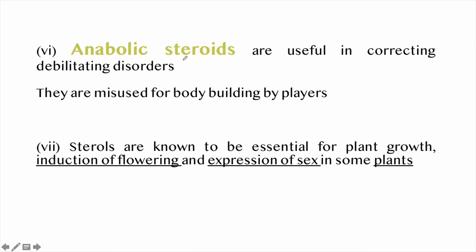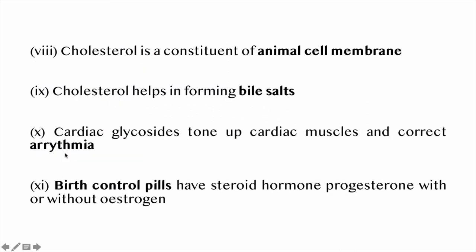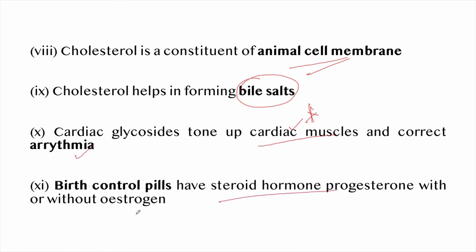Anabolic steroids are used mainly in debilitating disorders and are sometimes misused by bodybuilders or athletes. Sterols are essential for plant growth, induction of flowering, and expression of sex in some plants. Cholesterol is a constituent of animal cell membranes. Cholesterol helps in forming bile salts. Cardiac glycosides tone up cardiac muscles and correct arrhythmia. Birth control pills contain the steroid hormone progesterone with or without estrogen.